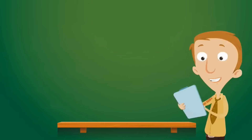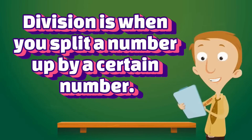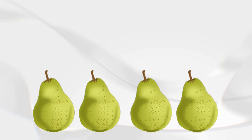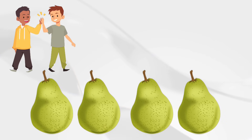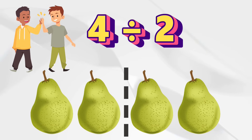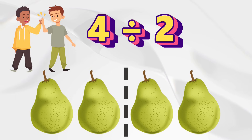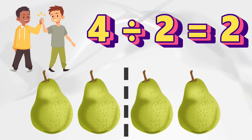Now, what is division? Well, division is when you split a number up by a certain number. Let's say there are four pairs. Michael and Liam want to split the pairs and they want to make sure it's fair. There are four pairs and we're dividing the pairs into two groups — one for Michael and one for Liam. Four divided by two equals two.